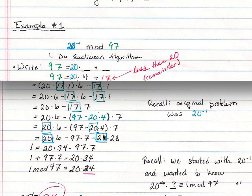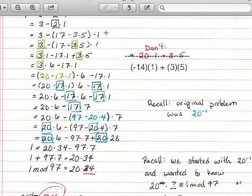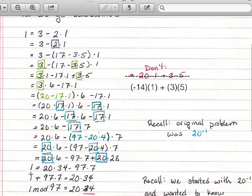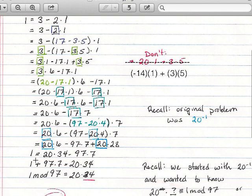So you'd say I have 20 times 6 minus 97 times 7 minus 20 times 28. Except for that it shouldn't be minus, it should be plus. There we go. Fix that. I have to distribute your negative. Very important. So now I can combine my terms with 20 in them. So I finally carried down my 1. And say 1 equals 20 times 34, 34 being 28 plus 6, minus 97 times 7.